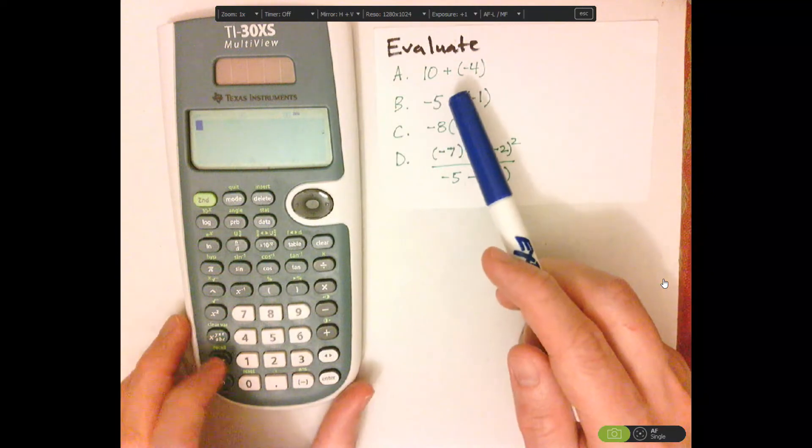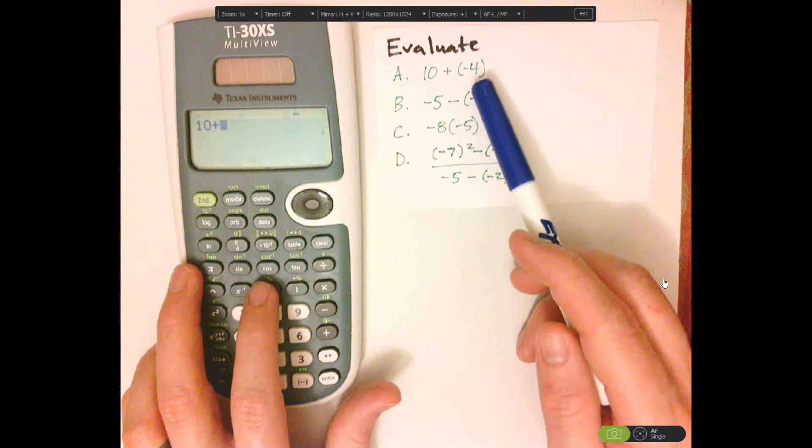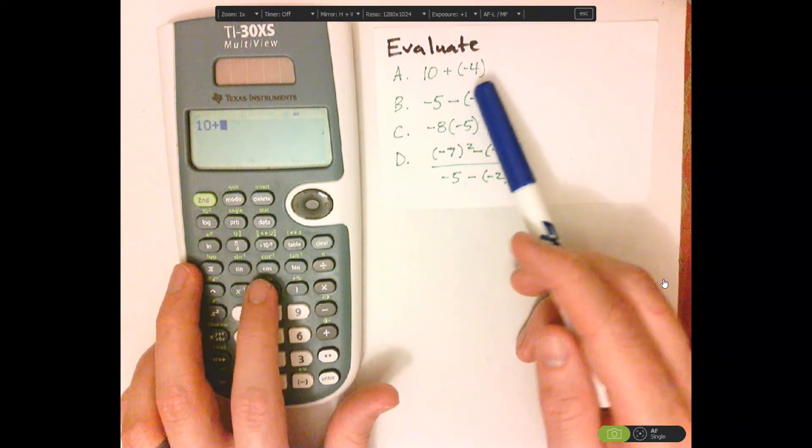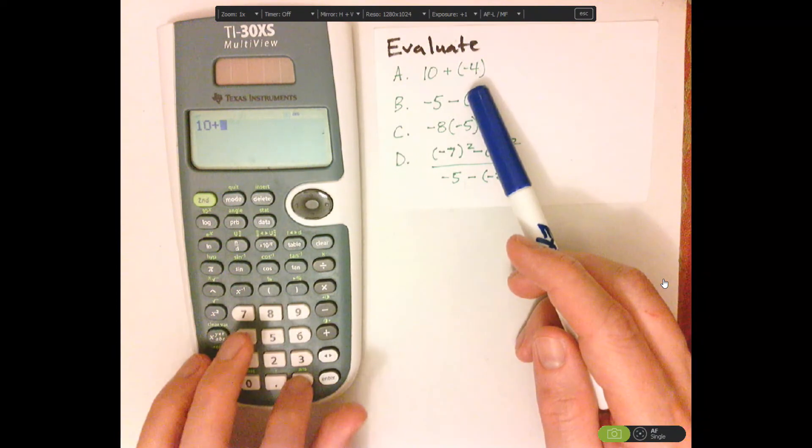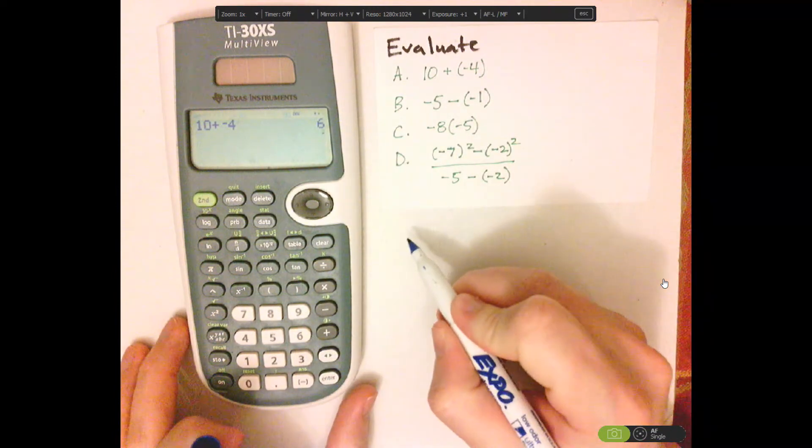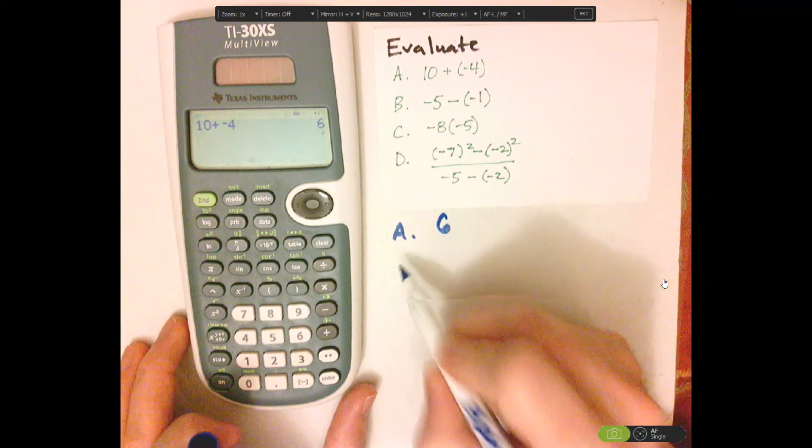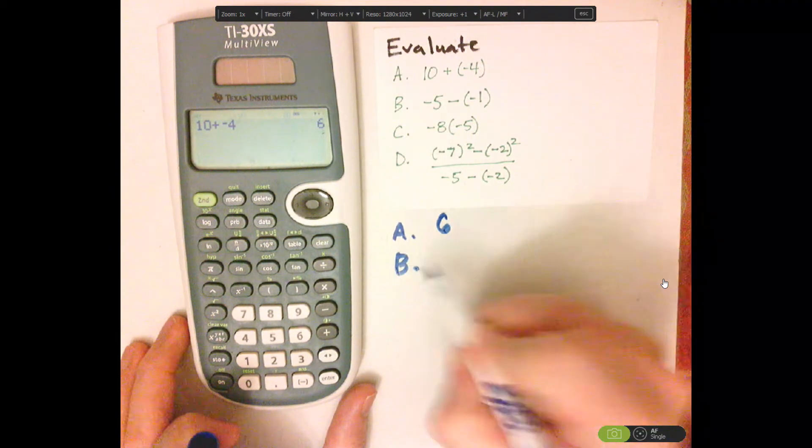First one is 10 plus, I could put that 4 in parentheses, but I don't have to, negative 4, enter. So letter A is 6, letter B.